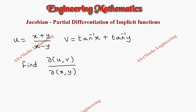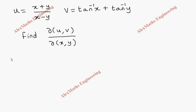Hi students, this is Alex. In this video we are going to find the partial differentiation of an implicit function using the Jacobian method, where u is (x plus y) divided by (x minus y), and v is tan inverse x plus tan inverse y. Now let's find ∂u/∂x using the quotient rule.